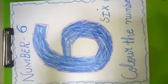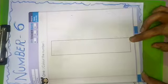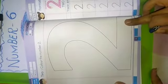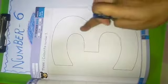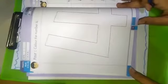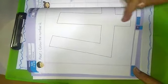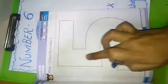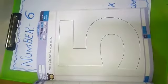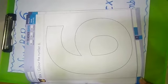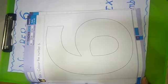Now revise number 1 to 6. This is number 1. This is number 2. This is number 3. This is number 4. This is number 5. And this is number 6. Okay students, now you learn counting 1 to 6 at home.